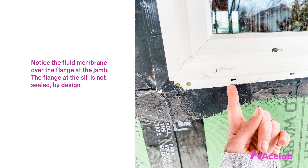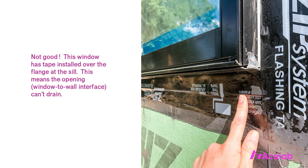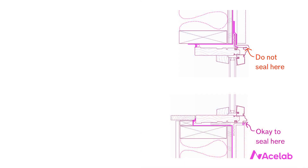With the sill flange left untaped, we're now what's called 'dried in' — our two-stage seal is complete. A secondary head flashing and cladding would complete the detail. The two-stage seal works just like a drained wall: the outer seal sheds water, the inner seal provides continuous air control, and the space between allows physical room for drainage.